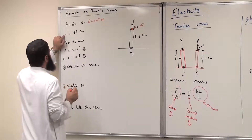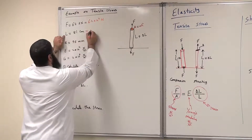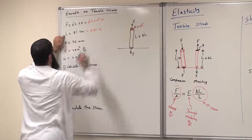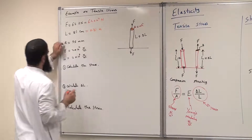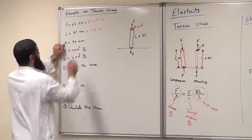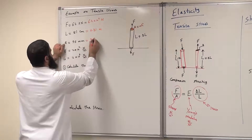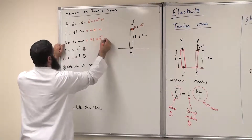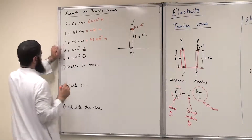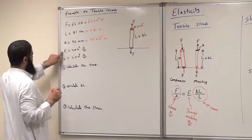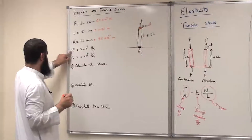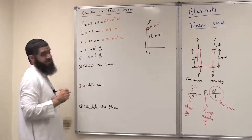The length is 81 centimeters, or we can write it as 0.81 meters. The radius is 9.5×10⁻³ meters. We are also given the Young's modulus and the Shear modulus.